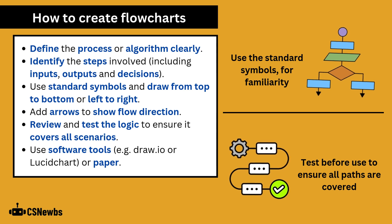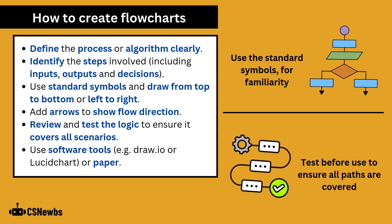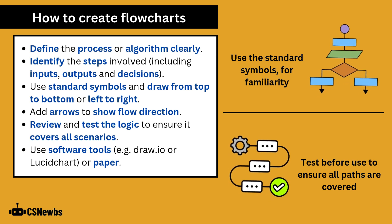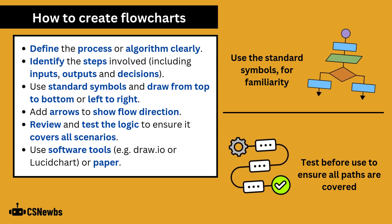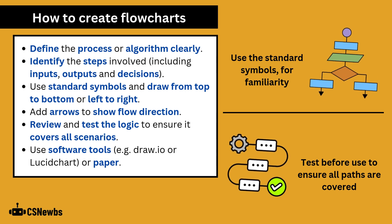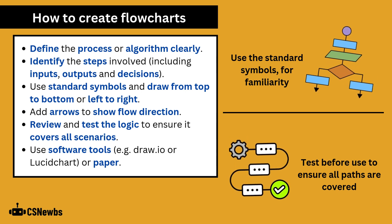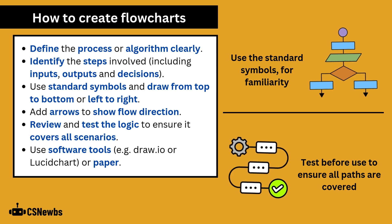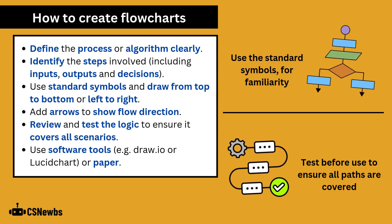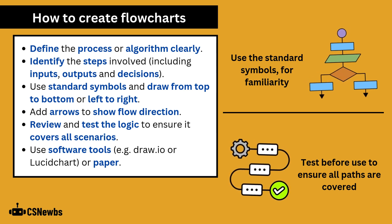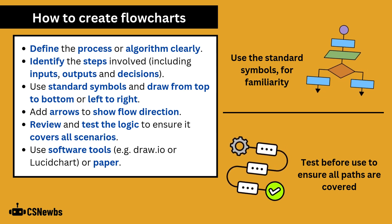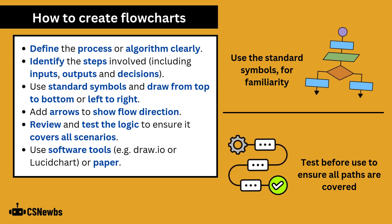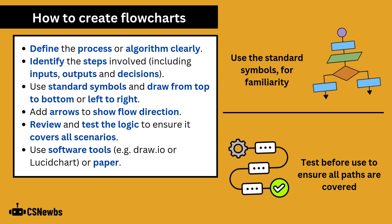To create flowcharts, start by defining the process or algorithm clearly. Identify the steps involved, including inputs, outputs, and decisions. Use standard symbols and draw from top to bottom or left to right. Add arrows to show flow direction. Review and test the logic to ensure it covers all scenarios. And use software tools or paper.